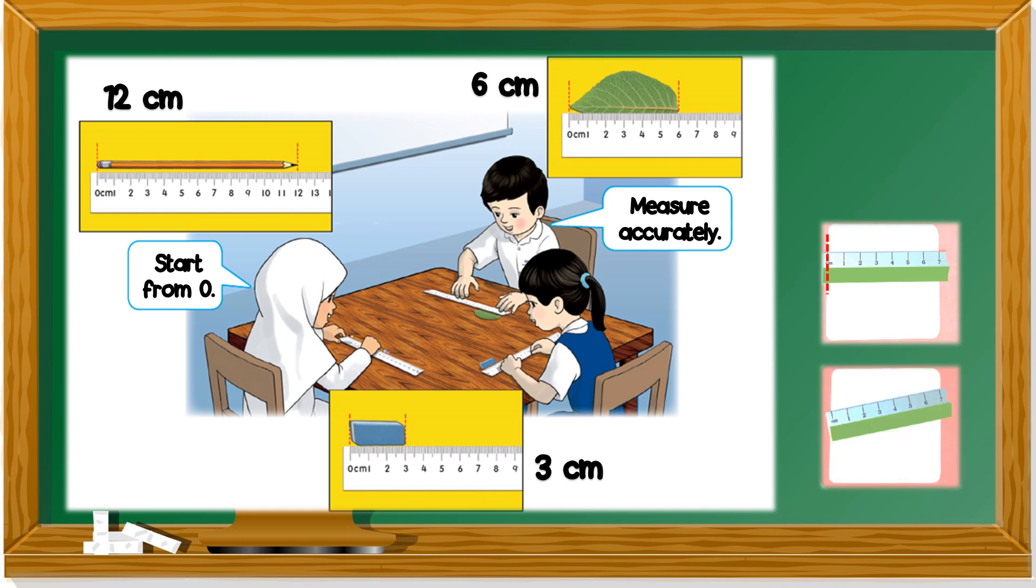How about this one? Start from zero, but the ruler is not straight. It's slanted, not straight. So this is wrong. This is not how you measure.